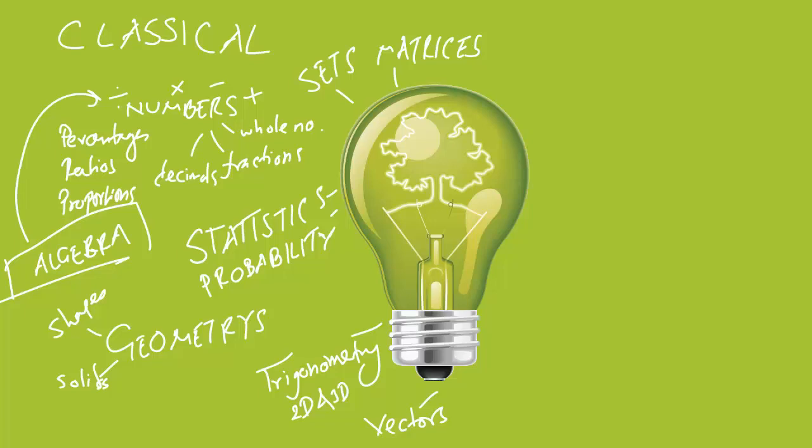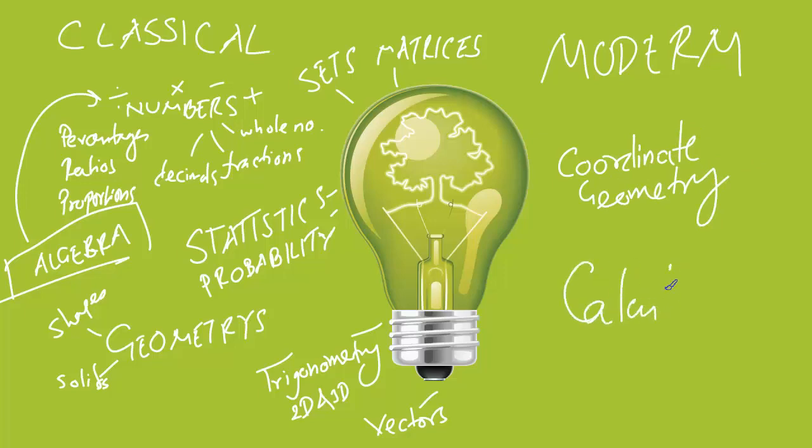The other part that we have is modern math. Modern math primarily deals with two fundamental concepts: coordinate or analytical geometry and calculus. These two are the topics that deal with modern math. We can call classical math some sort of an applied math or general math. And we can call modern math as pure math.